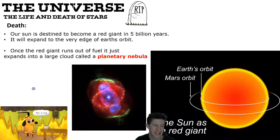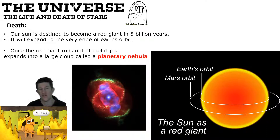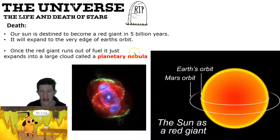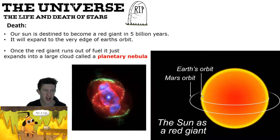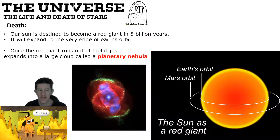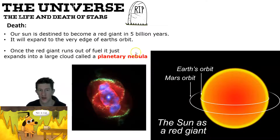In about 5 billion years our sun is going to expand to the very edge of Earth's orbit — Mars is further out, so the sun will basically just touch us. Once it runs out of fuel it won't generate enough heat to start the helium burning process, so it'll form into a large cloud called a planetary nebula, with a very hot core in the middle that slowly burns itself out and cools down.